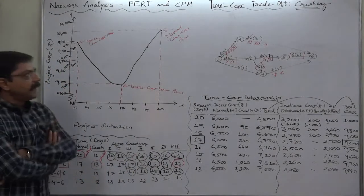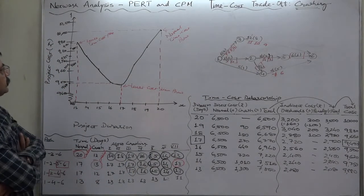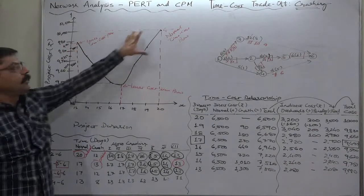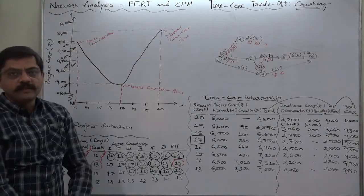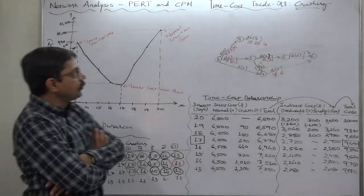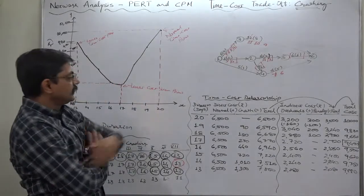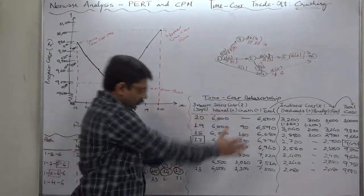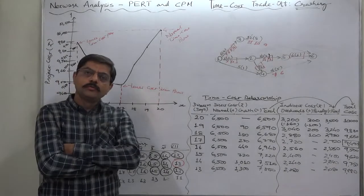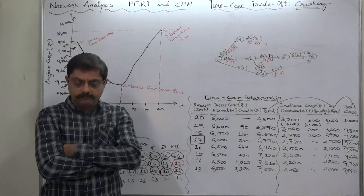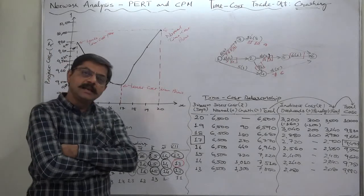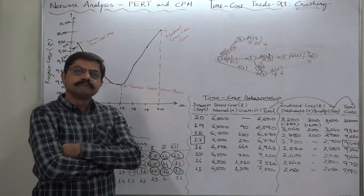So this was the third part in which we tried to learn about the time cost relationship through a diagram or a graph. So in this way we discussed everything about crashing that is time cost trade-off as well as time cost relationship through the calculation of total cost as well as the diagram. I hope you would be able to understand all the points on crashing through these three lectures on this case.